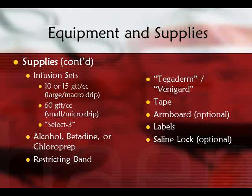Additional supplies include something for skin prep — alcohol, betadine, or chloropreps — a constricting band to help reduce blood flow, Tegaderm, Vena-Guard, or tape to secure things, and an optional arm board to restrict the arm and prevent kinking the IV at the antecubital fossa. Labels are only necessary if we're adding medications to the bag for infusion. A saline lock is also a possibility.